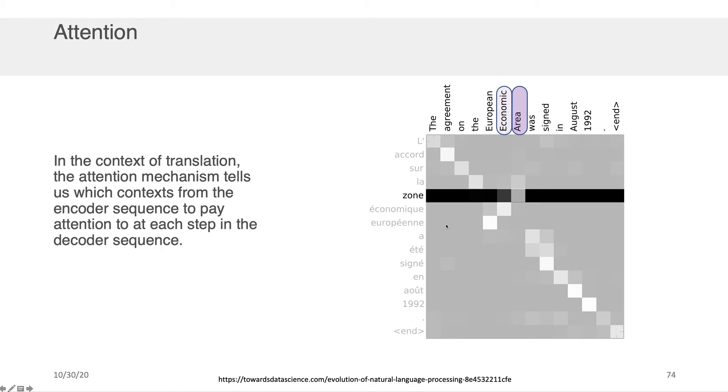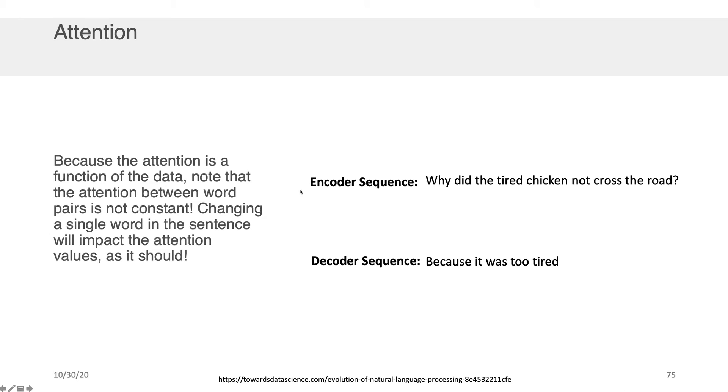And similarly, if we were trying to figure out the value of the word that fell into this location, let's say zone, but assume we didn't know it yet. What the attention model is telling us is you should look at economic area. Economic area are the two things in this long sequence that are the most relevant for if you want to decode the word on this location, which is zone in the French side.